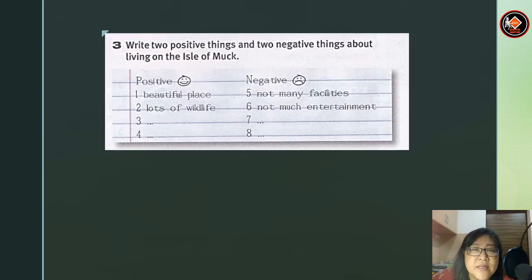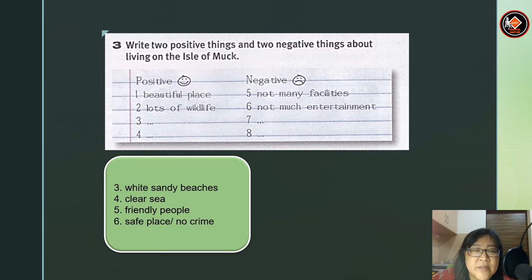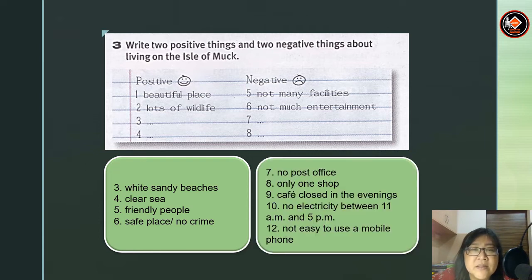Now write two positive things and two negative things about living on the Isle of Muck. Positive examples given: beautiful place, lots of wildlife. You can also add: white sandy beaches, clear sea, friendly people, and it's a safe place — there is no crime on the island. Negative things: there's no post office, there's only one shop, the cafe is closed in the evening, there's no electricity between 11 a.m. and 5 p.m., and it is not easy to use a mobile phone on the island.